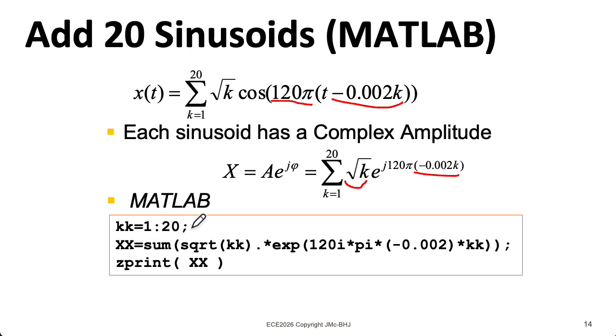When you want to multiply things element-wise, instead of doing a matrix multiplication, you put a period in front of the star for the multiplication. The rest of this should be fairly self-explanatory. Sum then sums up everything in the vector. MATLAB is nice because it will handle the whole vector at once. And then in the DSP first toolbox, there's a special routine called zprint that will print the complex number, or you could just say xx to give the number back in a non-pretty way.